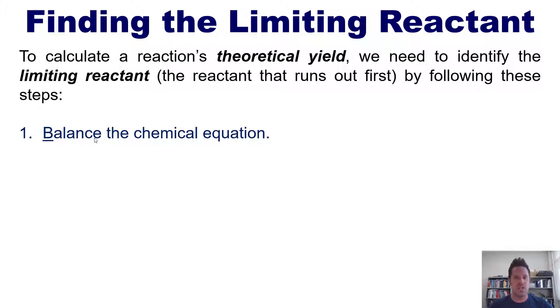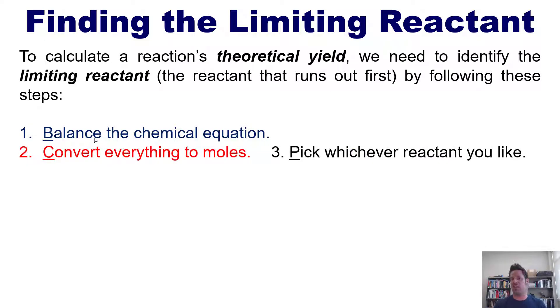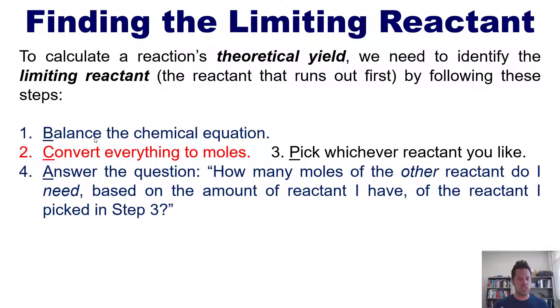One, balance your chemical equation using the principles we discussed in an earlier video linked in the description below. Two, convert everything to moles. Three, pick whichever reactant in your equation that you like. Four, answer this question: how many moles of the other reactant do I need based on the amount of reactant that I have of the reactant that I picked in step three?